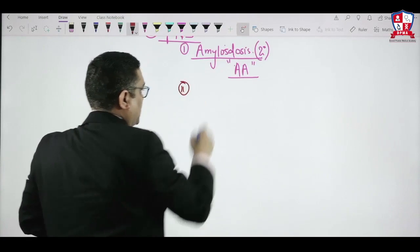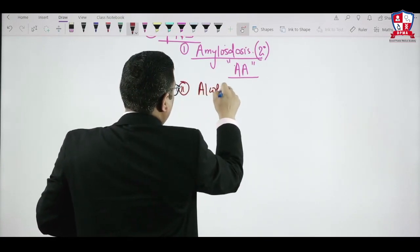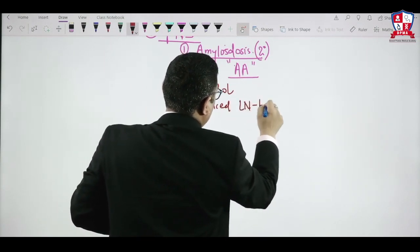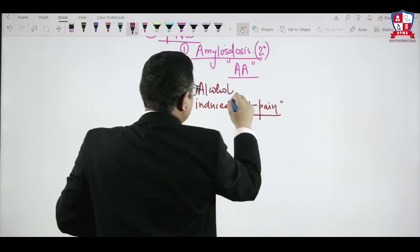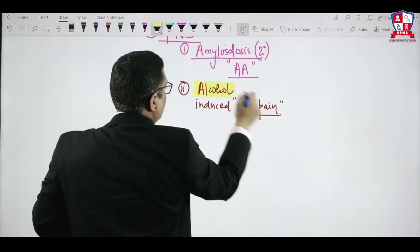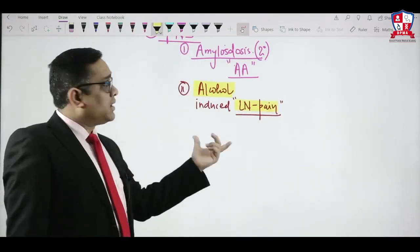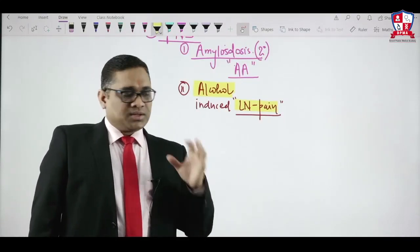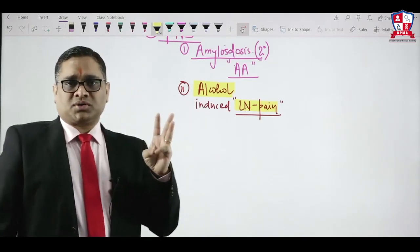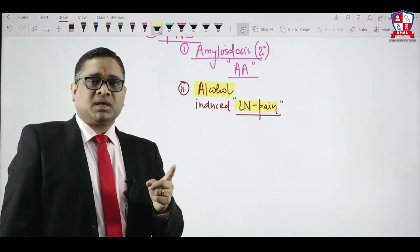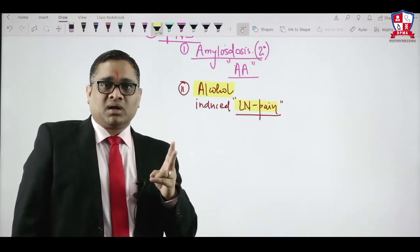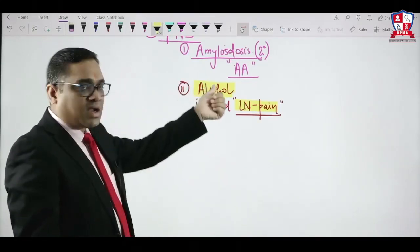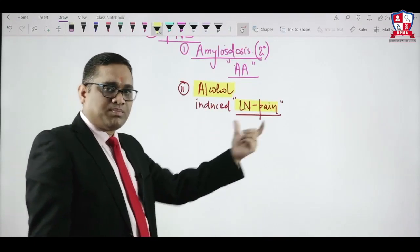The second paraneoplastic syndrome is alcohol-induced lymph node pain. Whenever this patient ingests alcohol, it creates pain in the lymph nodes. To summarize: painless cervical lymph node enlargement is the most common presentation; cyclical Pel-Epstein fever; and two paraneoplastic syndromes — secondary amyloidosis and alcohol-induced lymph node pain.